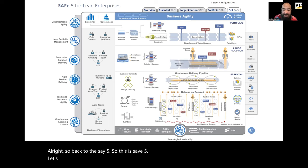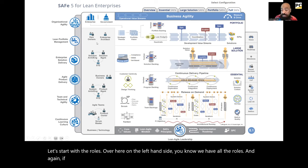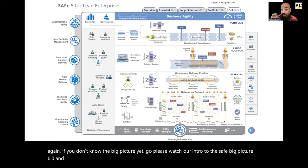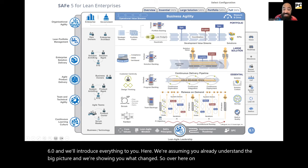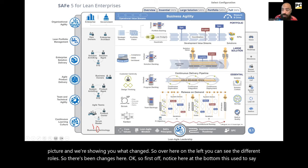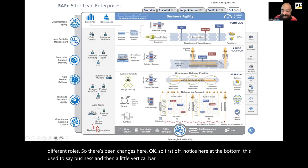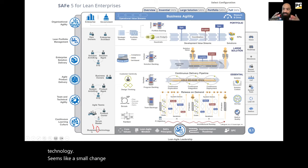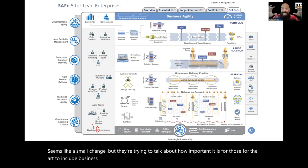Let's start with the roles. Over here on the left-hand side, we have all the roles. If you don't know the big picture yet, please go watch our intro to the SAFe big picture 6.0. We're assuming you already understand the big picture, and we're showing you what changed. Over here on the left, you can see the different roles. There have been changes here.